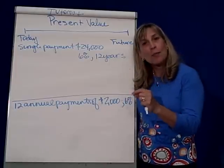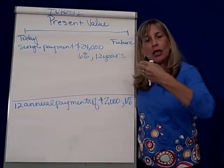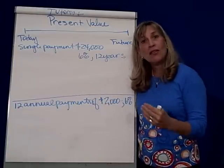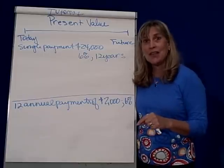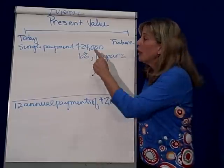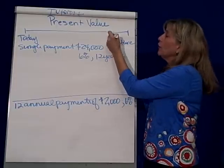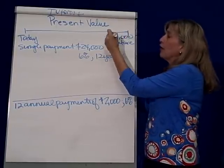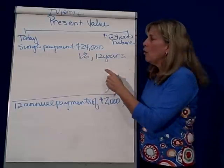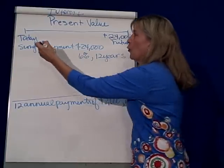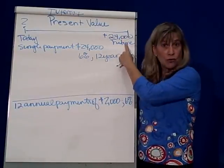So what we need to think about is taking different decisions that we might have and putting them all in today's dollars so that we can make a decision. For example, what if your grandma comes to you and says she's willing to pay you $24,000 as a single sum, but you're going to have to wait 12 years for it. So in the future I'm looking at $24,000 — what does that mean in terms of today's dollars? That's finding the present value of this future sum of $24,000.